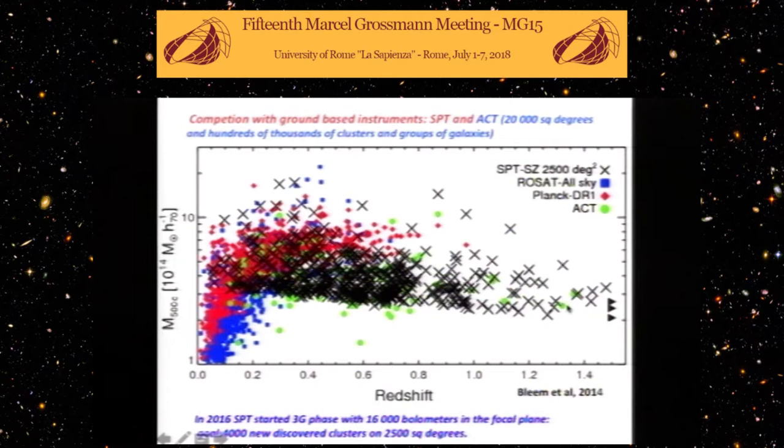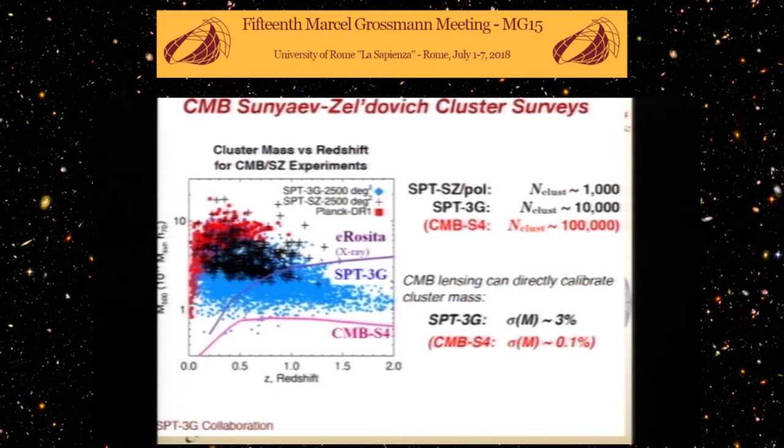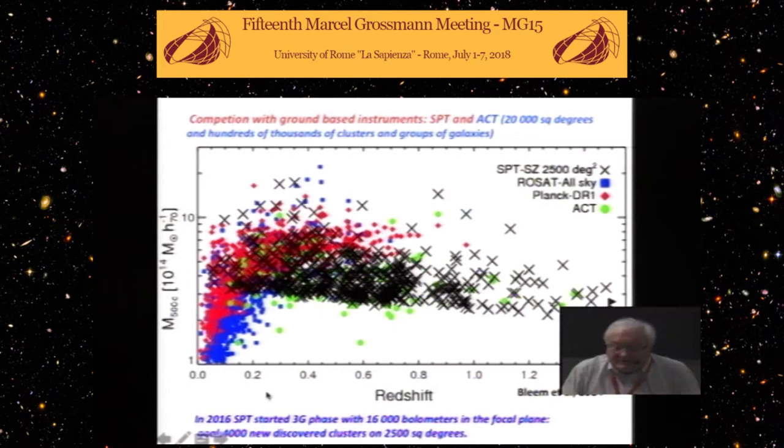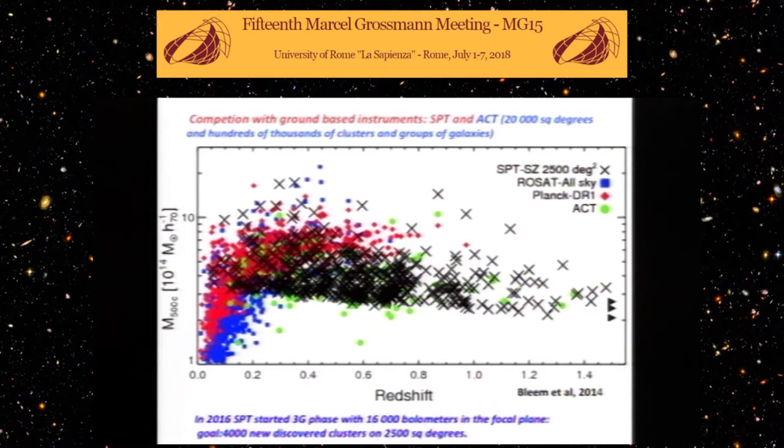Now what is interesting is how technology is developing. I can tell you that in 2016, South Pole Telescope started 3G phase. In focal planes there are 16,000 bolometers, cryogenically cooled bolometers, and they accelerate enormously the scanning time. Very rapidly you can scan and discover such objects, just shadows on the sky.